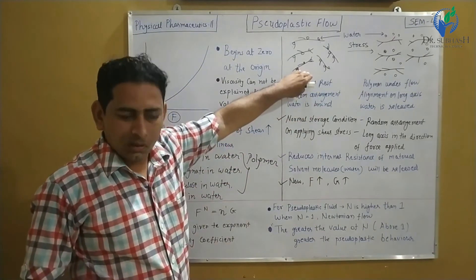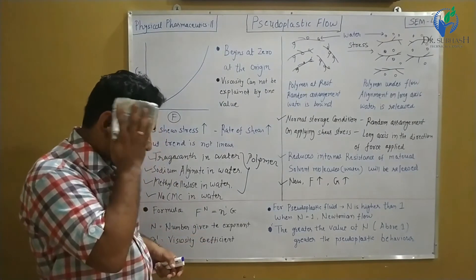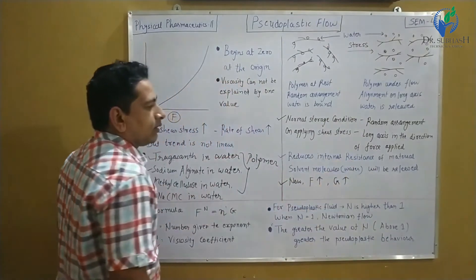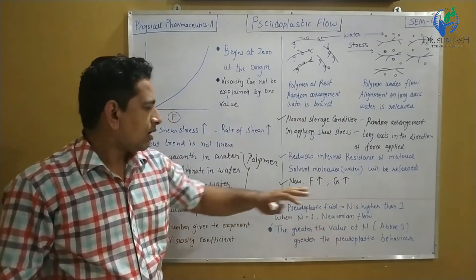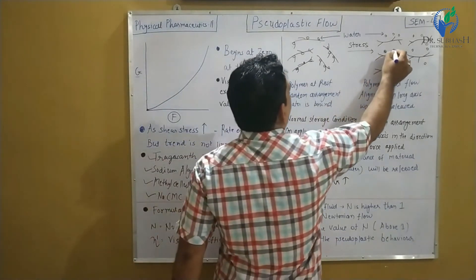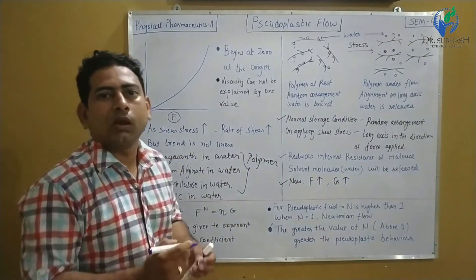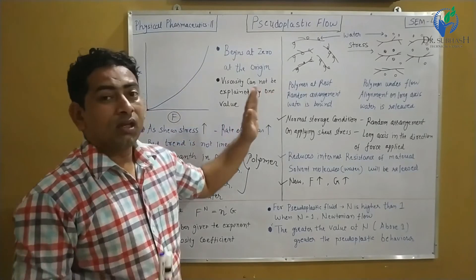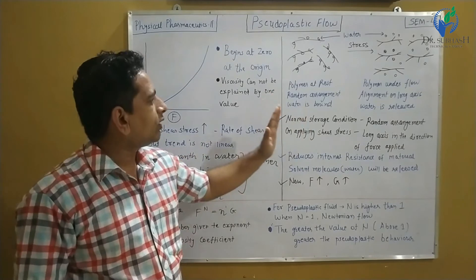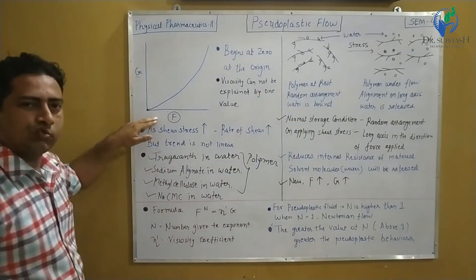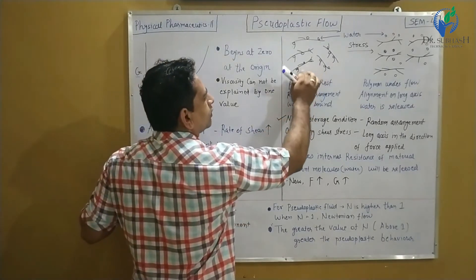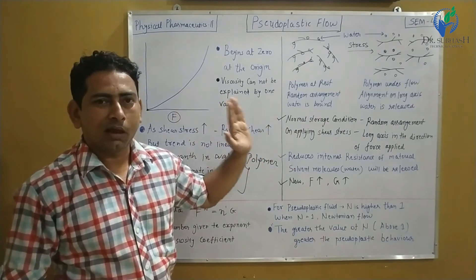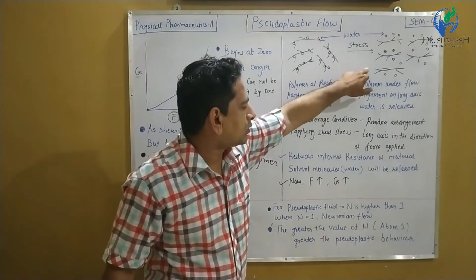When we are applying the stress, the internal resistance of the material will be decreased, and the solvent molecule — that is the water — will be released. So this is what happens when we apply force in case of pseudoplastic flow. The polymer molecules having random arrangement will be arranged in a particular direction — in the direction of the force applied — and then they will start to flow. Here we can consider that the viscosity cannot be explained by a single value.